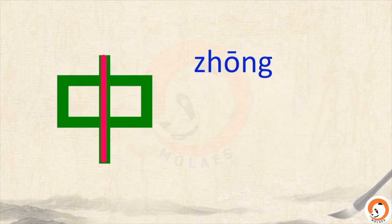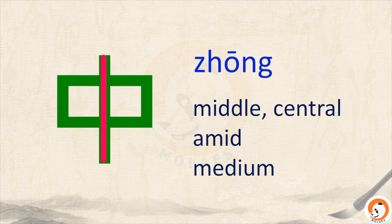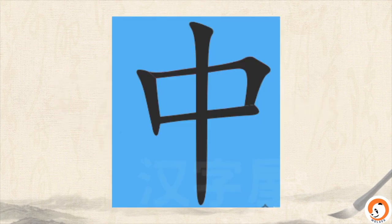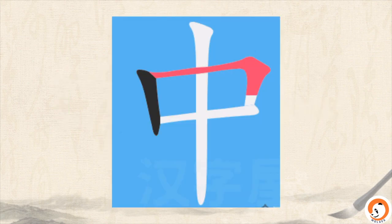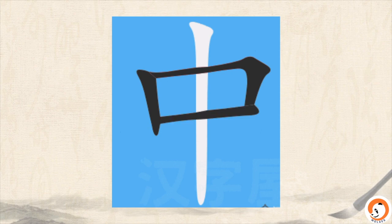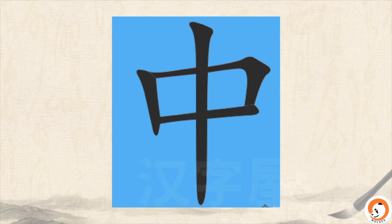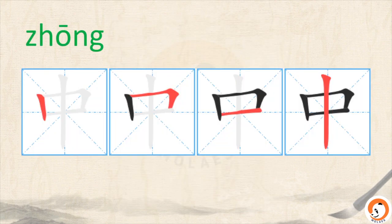中 means middle, center, also mid and medium. 中. Let's see how to write it: 一, 二, 三, 四 — four strokes. Let's practice together: 一, 二, 三, 四.